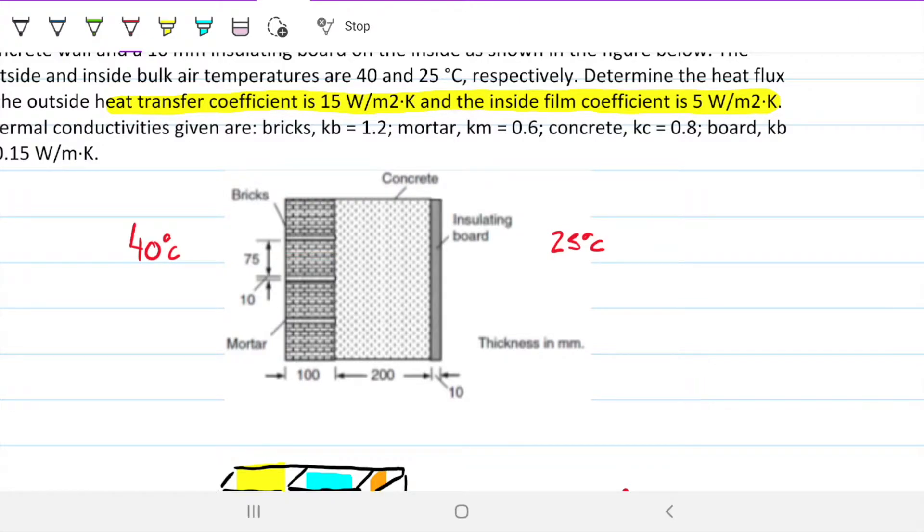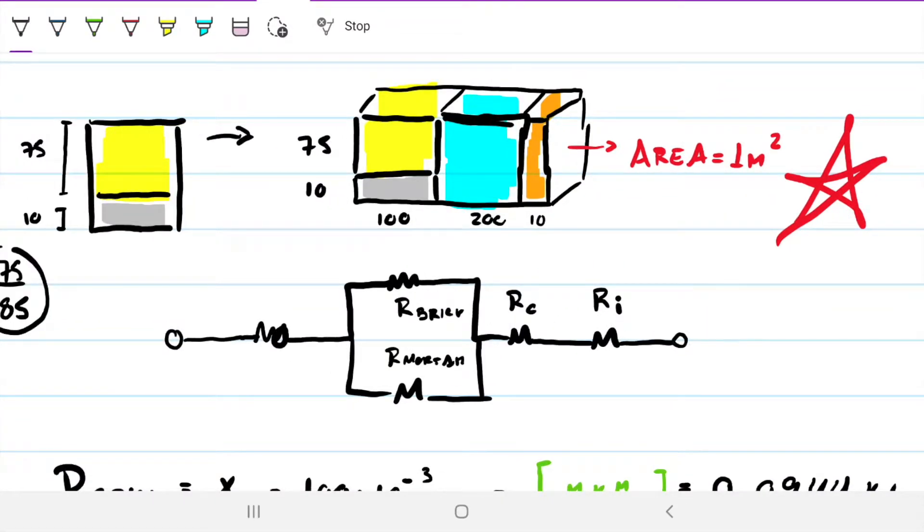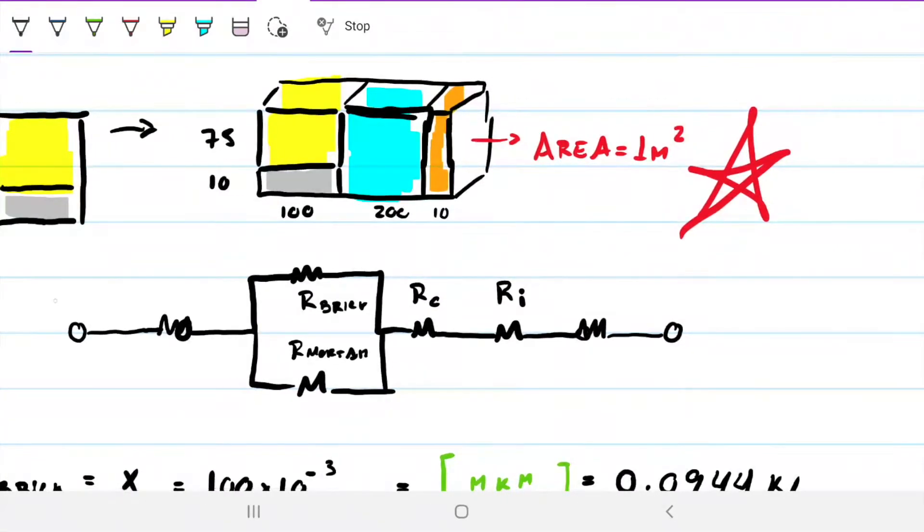Now the only thing that changed is that when we do our equivalent circuit, instead of having only the conductive resistances, we're going to have some extra resistances. So instead of having the end here, now I'm going to have the extra resistance. So now this is still 40, this is still 25, but now I have the outer convective resistance and the inner convective resistance.